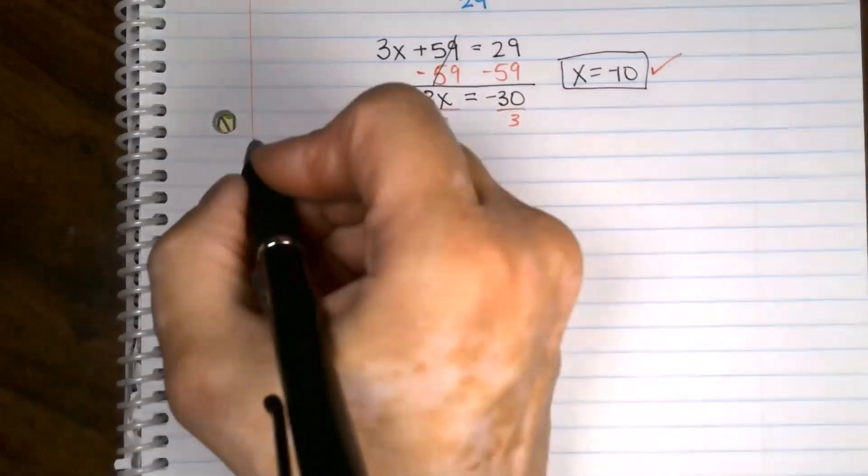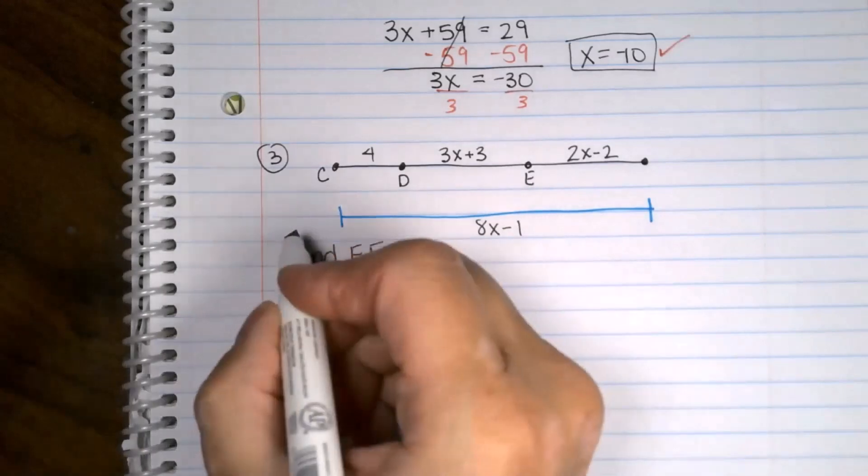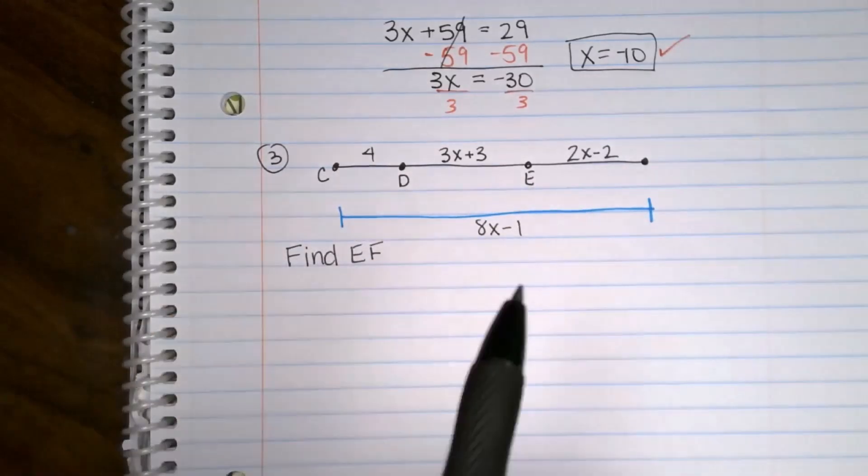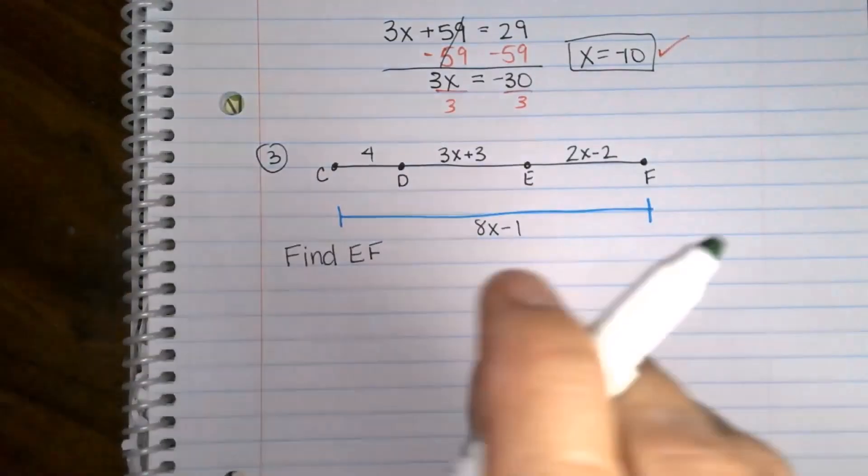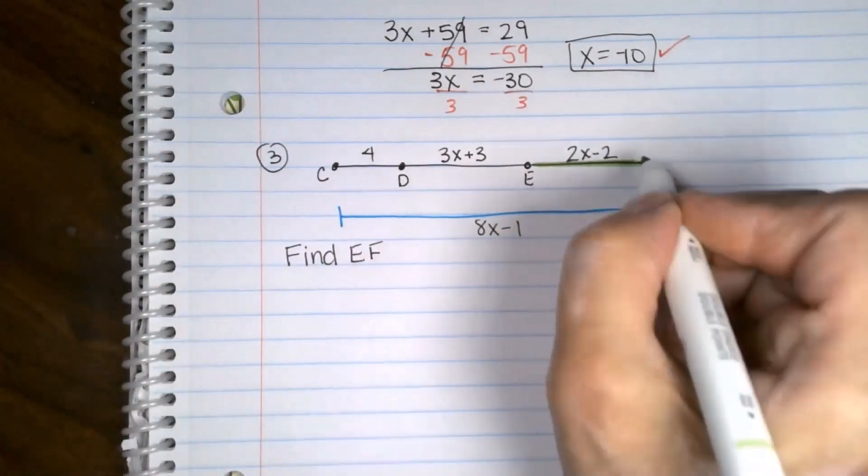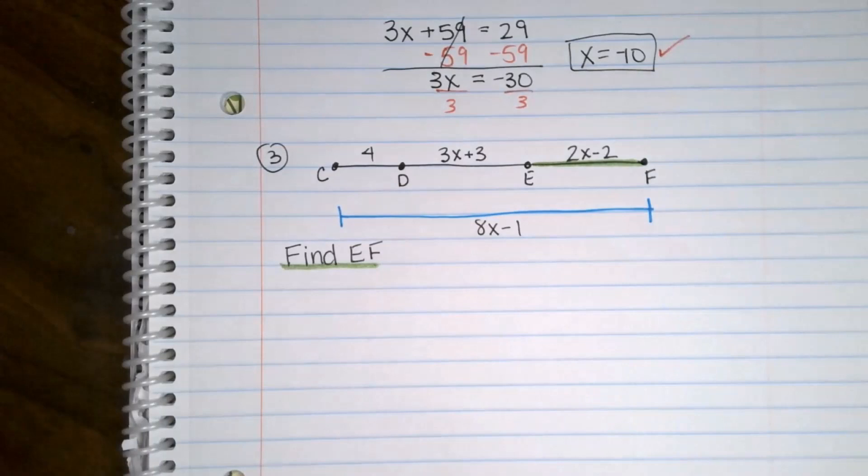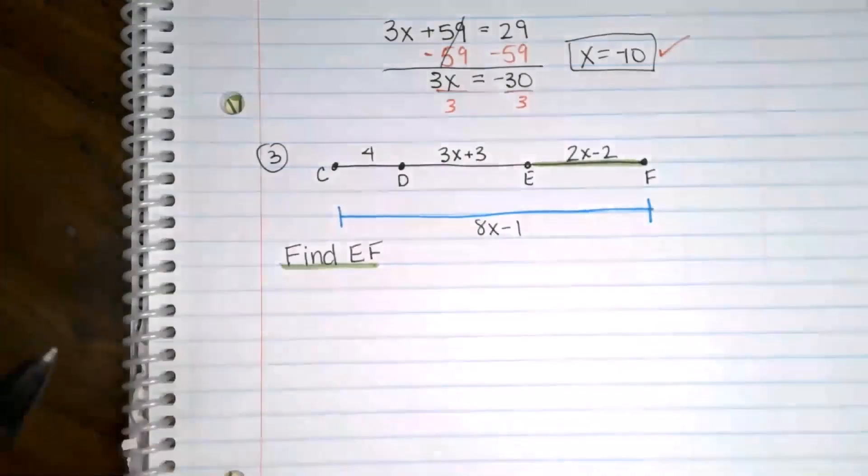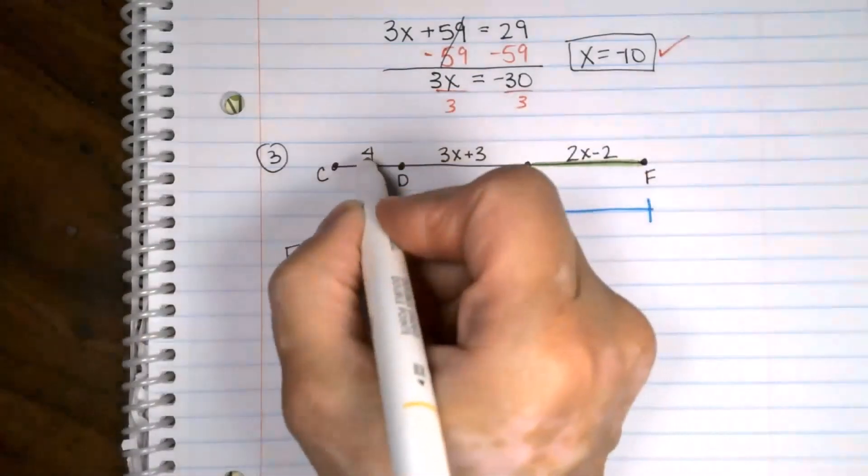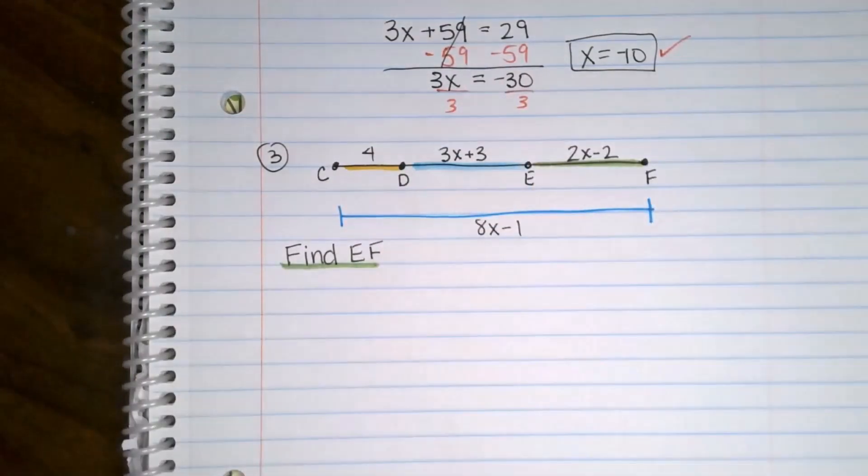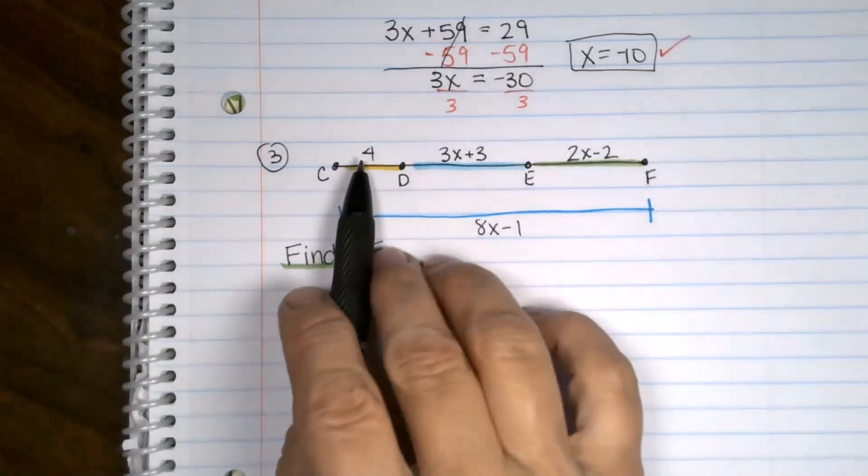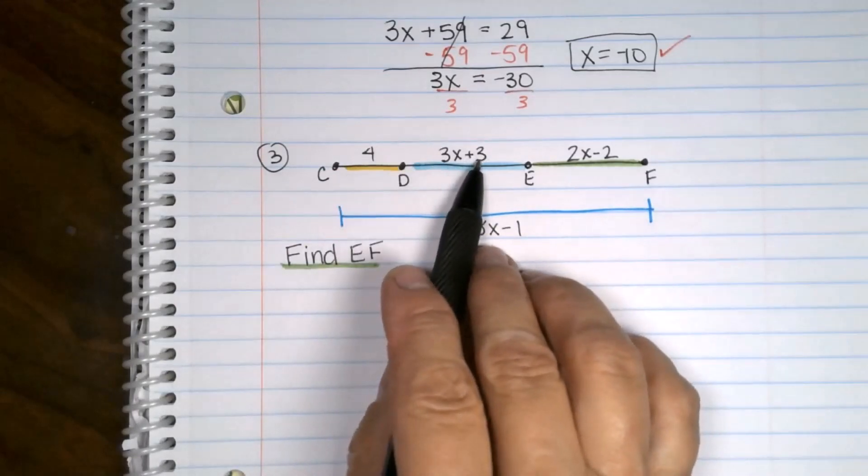Here comes try it number 3. You're going to have to solve for X first, but eventually you're going to plug that in. Because it wants you to find EF, which I forgot to write the F. It's right here. So ultimately, we are looking for this length. But we won't find that until the end. We have to set up and solve for X first. So like we've been doing, segment addition postulate says you add all these chunks together. And you set it equal to the whole thing.